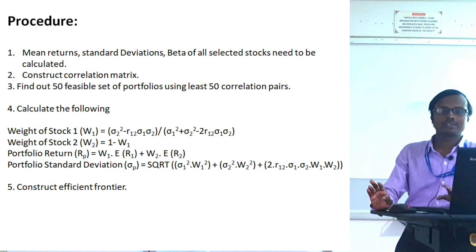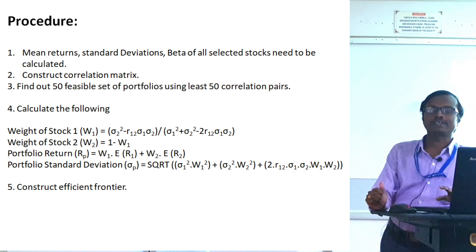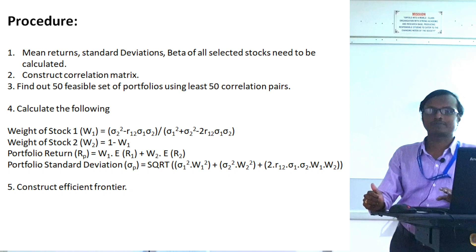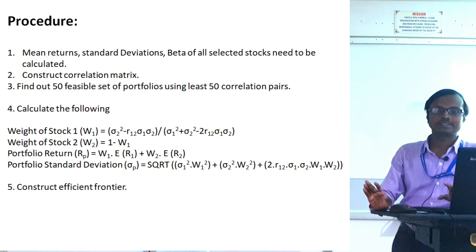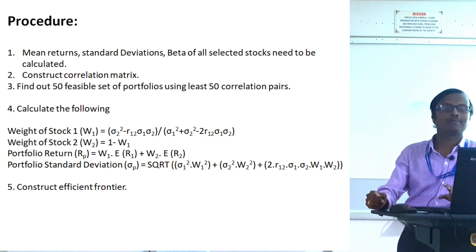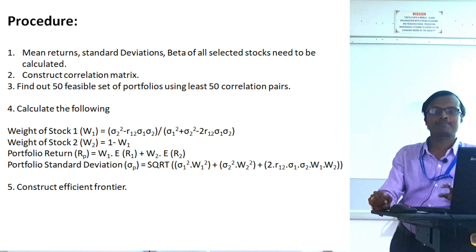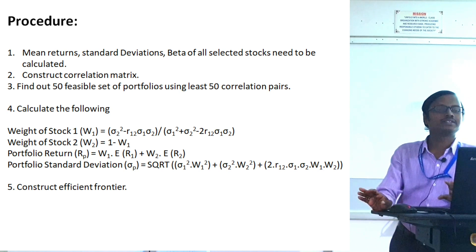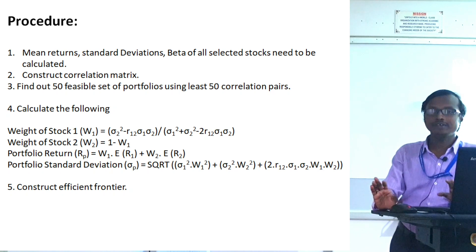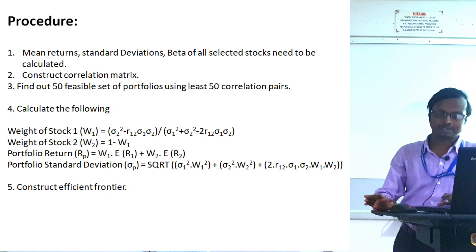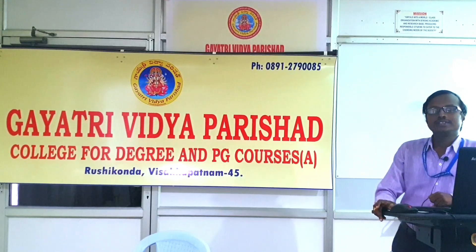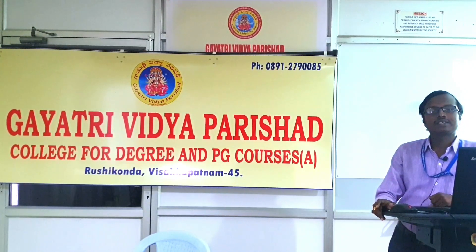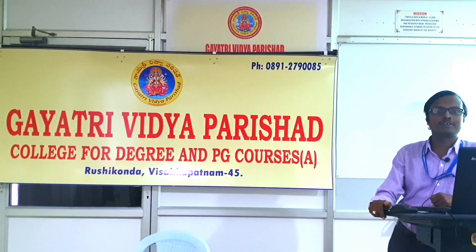The proportion of investment in stock 2 is simply W2 = 1 − W1. Then we calculate the return of the portfolio using the weighted average method: Rp = W1·E(R1) + W2·E(R2). For the risk of the portfolio we calculate the standard deviation using the variance formula, and using the dominance principle we obtain the efficient set of portfolios.